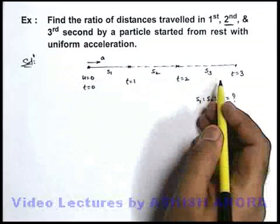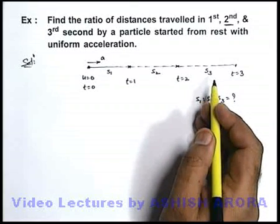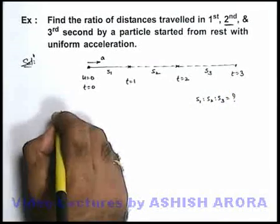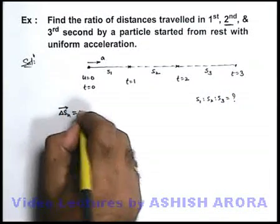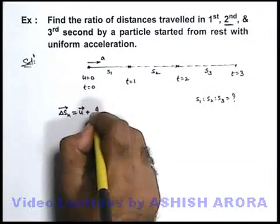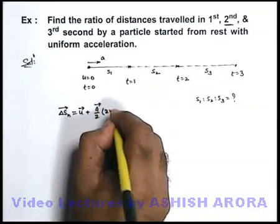I suppose all of you can recall the direct expression for finding the displacement covered by the particle in nth second. The displacement covered in nth second can be written as u + (a/2)(2n-1).